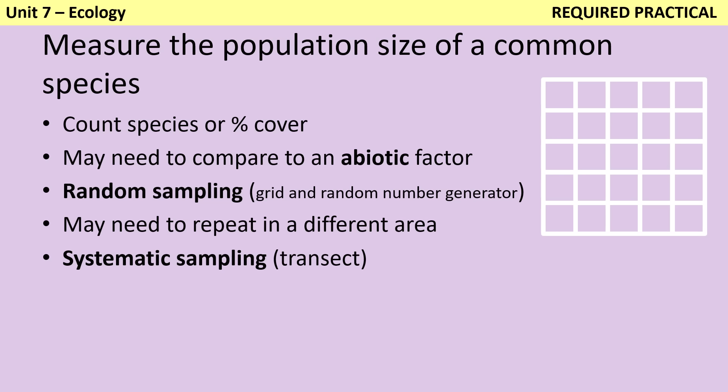Depending on the exact experiment, you might be using random sampling or transect sampling. Transect sampling is used for something where we're investigating an abiotic factor that changes gradually — for example, moisture content of the soil as we move away from a river, or light intensity going from under a big tree to the middle of a field. In those instances, I'm going to use a tape measure to make a very long straight line, and at set distances — probably every five or ten metres — I'll put down my quadrat and record the percentage cover of the species, and also make measurements of my abiotic factor using a light metre, pH probe, or moisture probe.